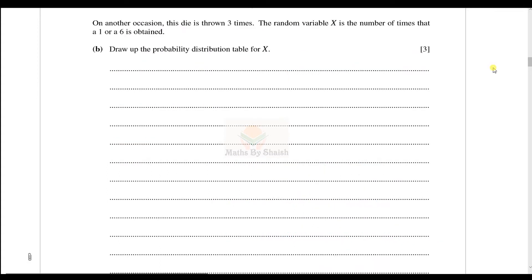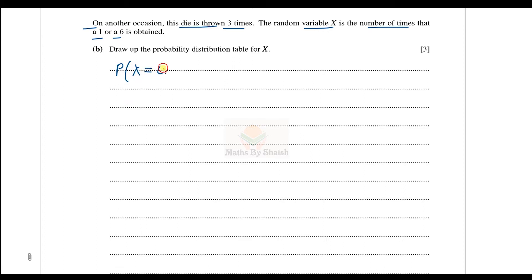For part (b), on another occasion the die is thrown three times. The random variable X is the number of times that a one or a six is obtained. We need to draw the probability distribution table. We already know P(1 or 6) = 1/3, and P(not 1 or 6) = 2/3.